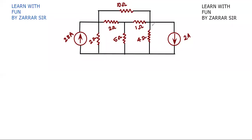Assalamualaikum, welcome to my channel 'Learn with Fun by RAR Sir.' Today we will extend the topic we have already studied — Kirchhoff's Current Law. Using KCL you can find node voltages, and using Kirchhoff's Voltage Law you will find current inside the loop. This is called mesh analysis, and the other is called nodal analysis.